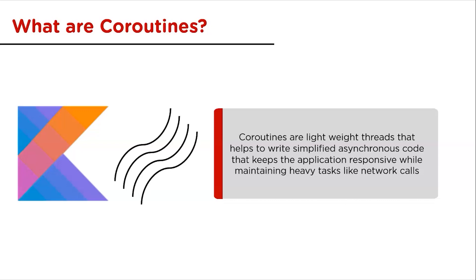Coroutines are executed inside a thread and are also suspendable. The word 'suspendable' means we can execute some instructions, stop the coroutine mid-execution, and continue when we wish to. Coroutines can also switch between threads, which gives them an edge over threads.